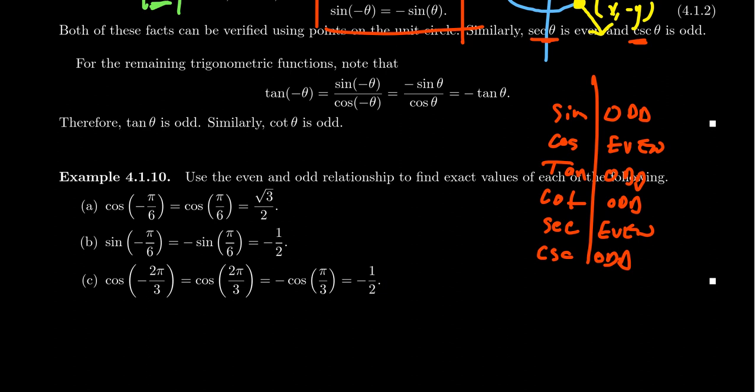The symmetry identities allow us to compute sine, cosine, tangent, and any of the trig functions when we have negative angles — clockwise angles — because sine is odd and cosine is even.